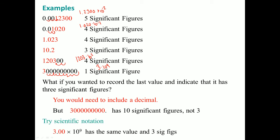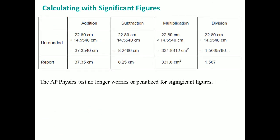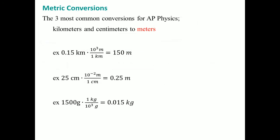Here's some rules in calculating with significant figures. Please understand that the AP test no longer worries or penalizes for significant figures. Our basic metric conversions - the three most common ones for AP physics are given here: kilometers, centimeters to meters. Here is the example given. Notice that every one of these are your unit conversions that you do not have to memorize because it is on your formula sheet.